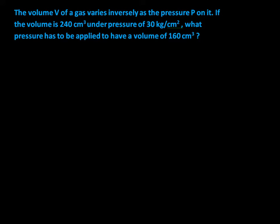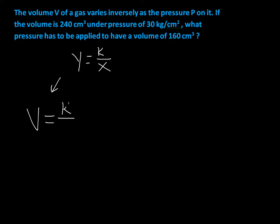Inverse variation really simplifies things for us. What kind of variation are we dealing with? We have inverse variation. The equation for inverse variation is Y equals K over X — that's just the generalized form. In our problem, instead of Y and X, we're going to have V and P. K always stays around. So our equation is V equals K over P, since V varies inversely with pressure.